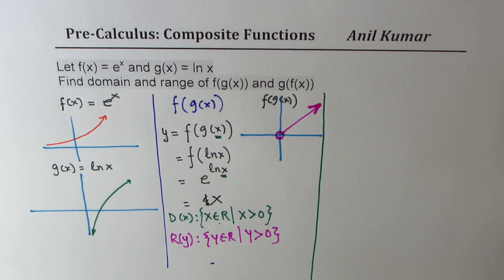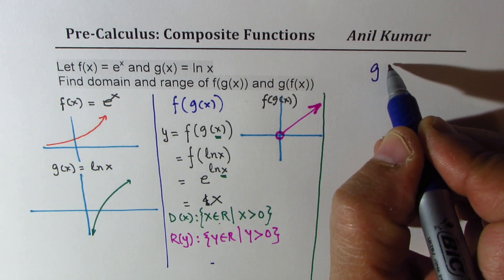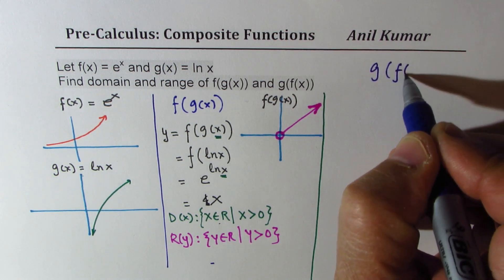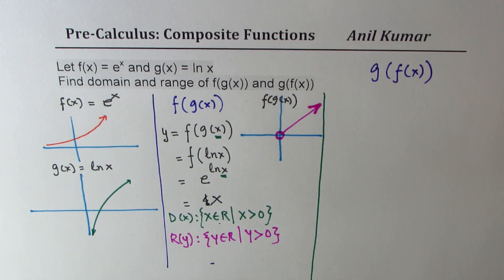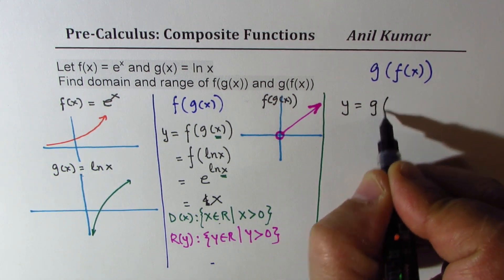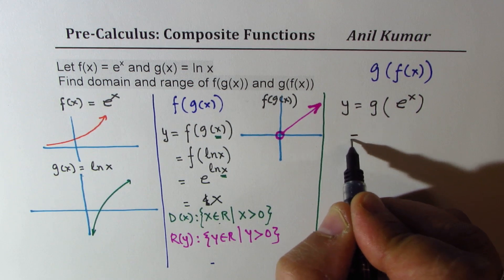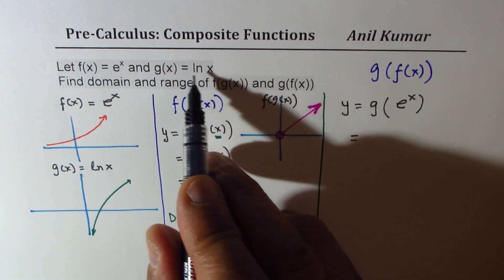So when it is g(f(x)), I could write this as: let's write y equals g of what? f(x) is e to the power of x. Now that gives me g is ln x, so it gives me ln(e to the power of x).